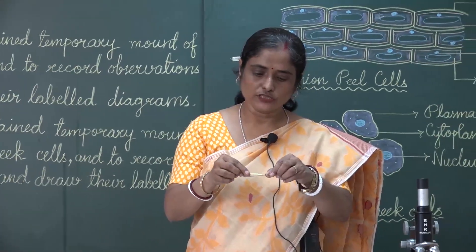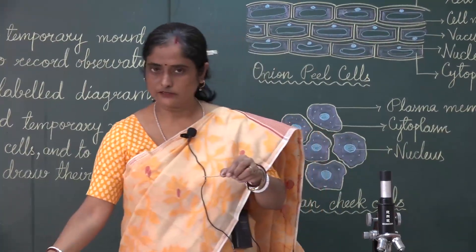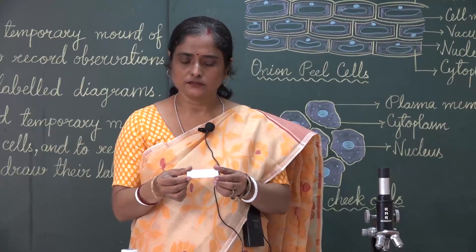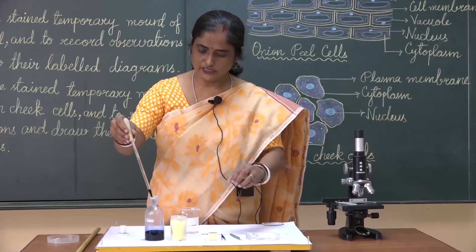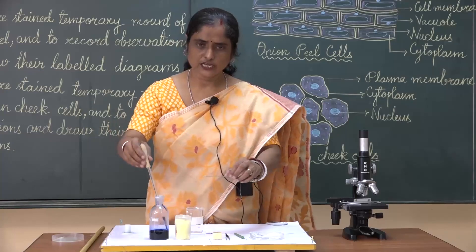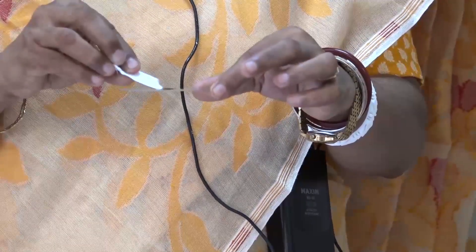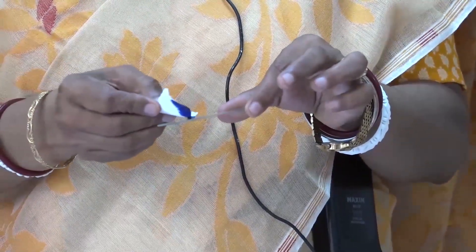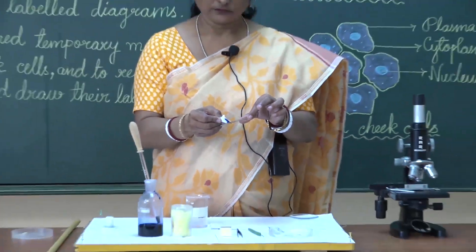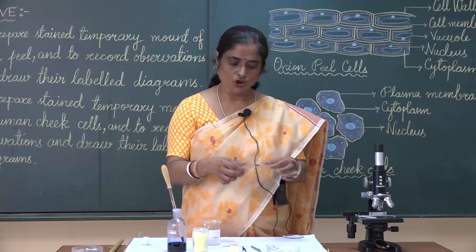Take the scrapings and put them on the slide, and the used toothpick has to go into the bin. The scrapings are put on the slide — you cannot see them as they are white. So we should not let it dry and should immediately put a drop of stain. If there is excess stain, take a blotting paper and at the corner, try to soak the extra stain. The material should not come out into the blotting paper — take care. Once done, all the extra stain is removed.